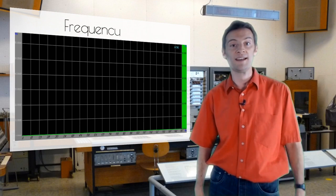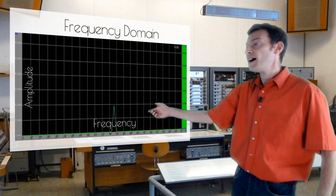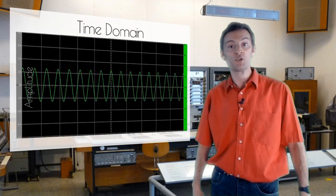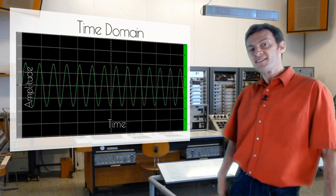This new way of looking at my sine wave is known as looking at it in the frequency domain, plotting the amplitude of the sine wave against its frequency, as opposed to the way we looked at it before in the time domain, when we plotted how the amplitude of our sine wave changed over time.